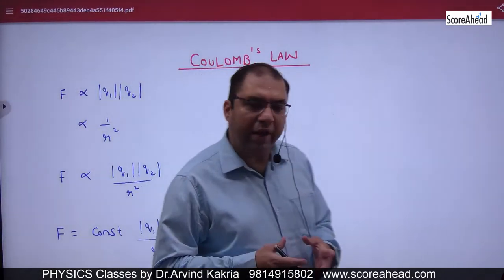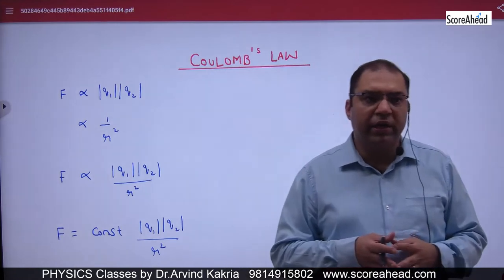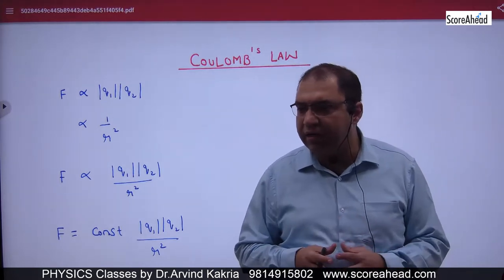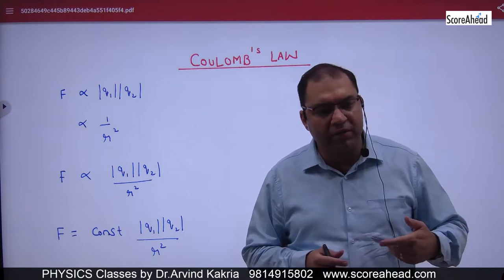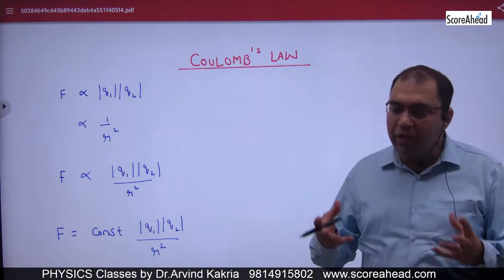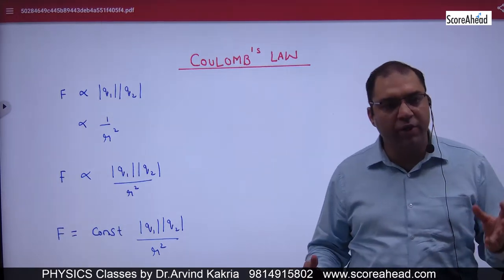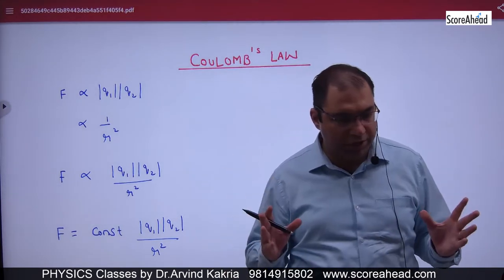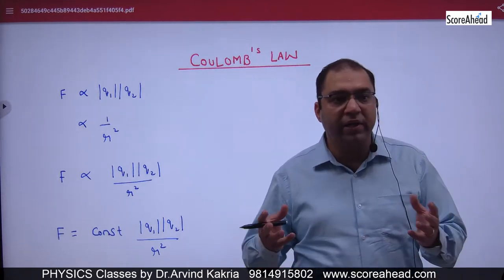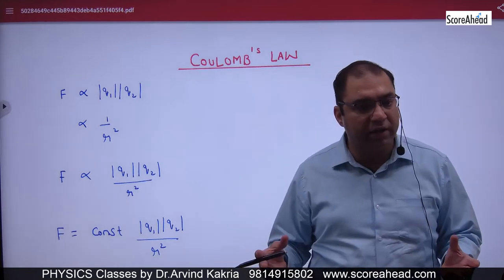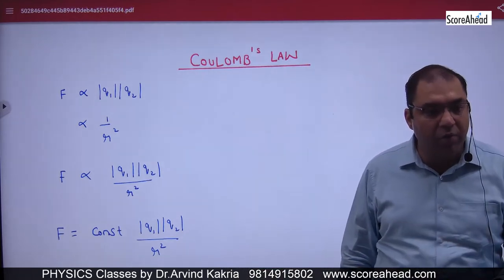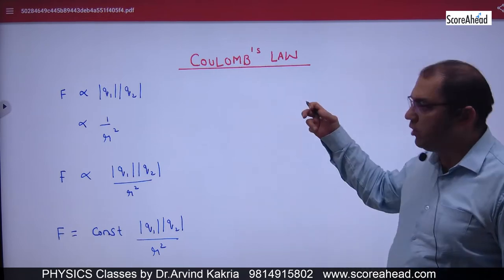In this chapter of Electrostatics, we start with the mathematical foundation of Coulomb's Law. We have studied how many types of charges a body can have and how charges can be produced. Now let's consider two bodies — Q1 and Q2 — that will either attract or repel each other. There will be a force, and Coulomb's Law tells us the magnitude of that force.